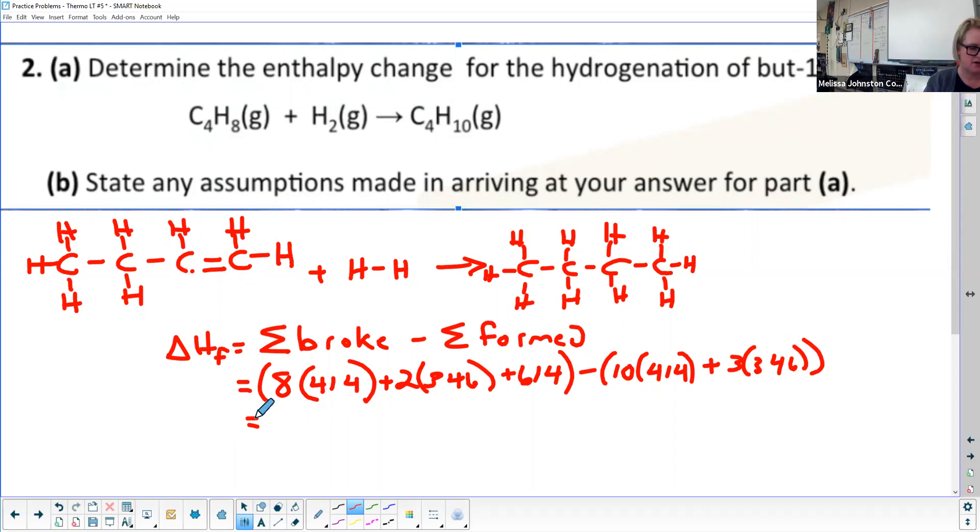All right, so broke minus formed. Doing my math, I got eight times 414 plus two times 346, doing all of that joule accounting there, plus 614. Get that answer, subtract from that 10 times 414 plus three times 346.